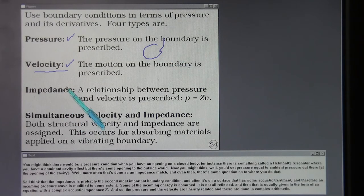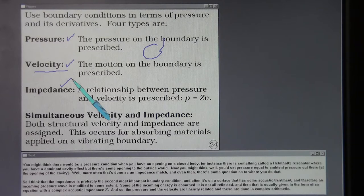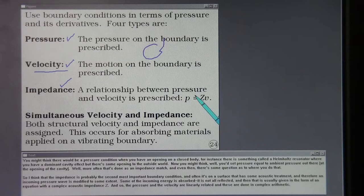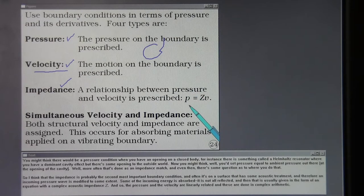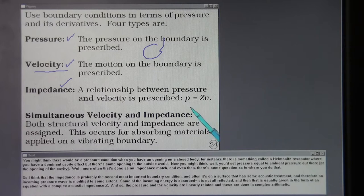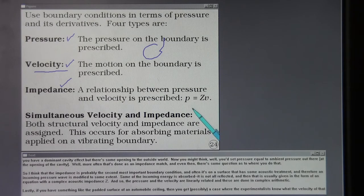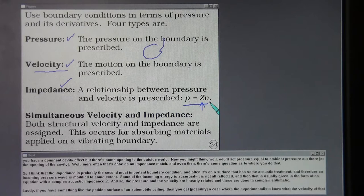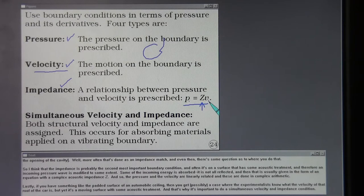So I think the impedance is probably the second most important boundary condition. And often it's on a surface that has some acoustic treatment and therefore an incoming pressure wave is modified to some extent. Some of the energy is absorbed, it's not all reflected. And then that's usually given in the term of an equation with a complex acoustic impedance Z. And so the pressure and the velocity are linearly related and these are done in complex arithmetic.